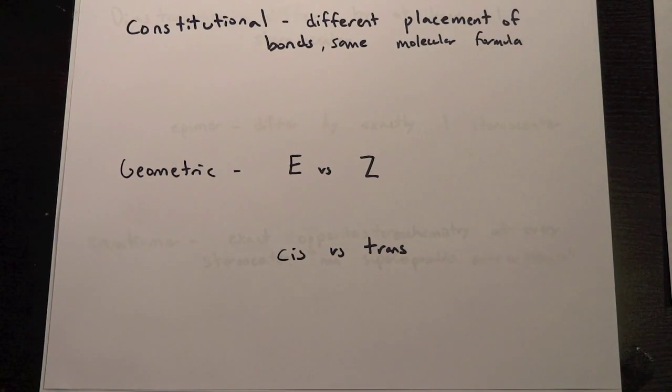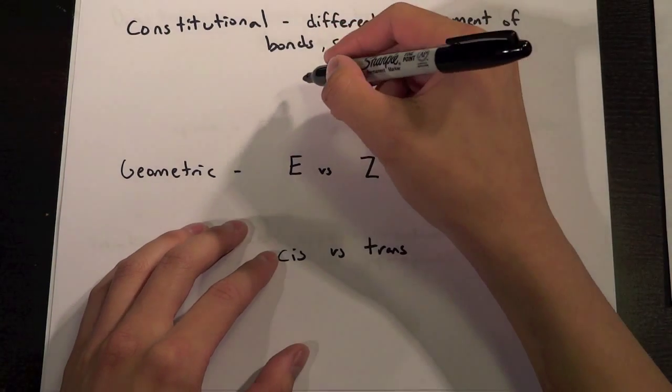So constitutional isomers is something that has a different placement of bonds with the same molecular formula. And just to let you know, all isomers have the same molecular formula but are rearranged differently. So a constitutional isomer would be something like this versus that, so alkane versus isoalkane.